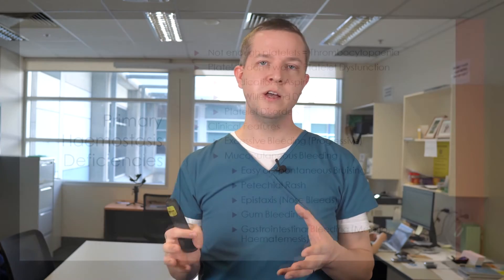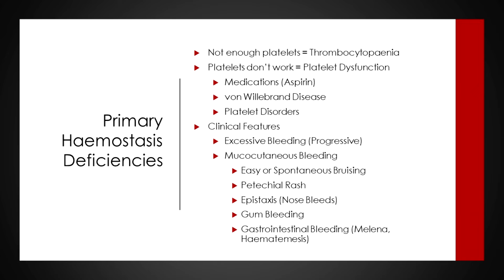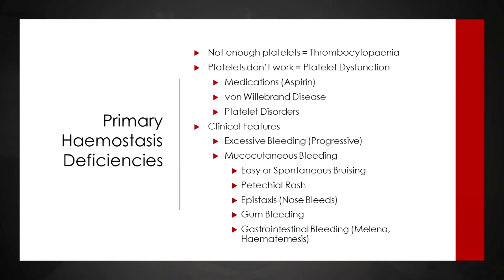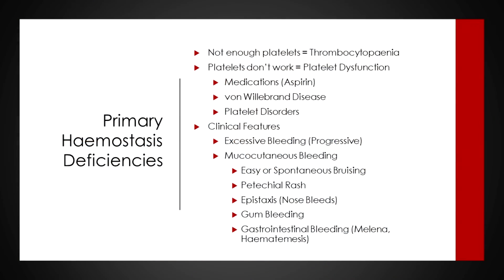Primary hemostatic disorders classically present with mucocutaneous bleeding — 'muco' referring to the mucosa, particularly of the GI tract or respiratory tract, where there's high cell turnover and spontaneous hemorrhage can occur, and 'cutaneous' referring to the skin where we see petechial hemorrhage and bruising. We'll see easy or spontaneous bruising, a petechial rash where capillaries within the cutaneous layer rupture and hemorrhage causing micro-bleeds globally over the body, epistaxis, and gum bleeding.